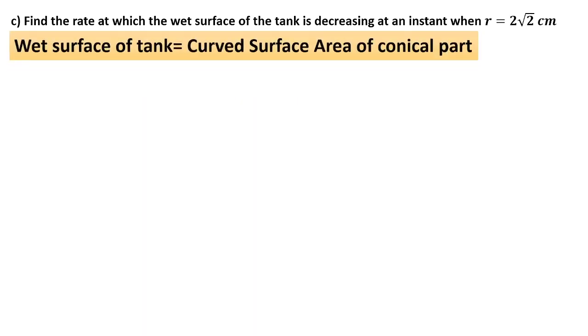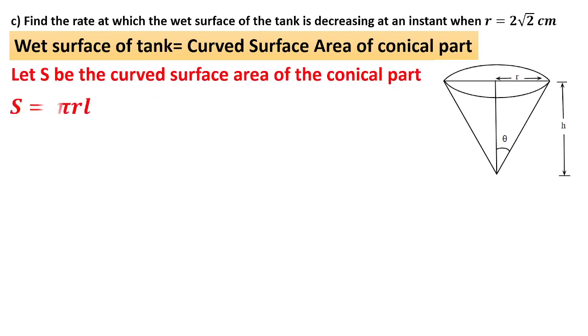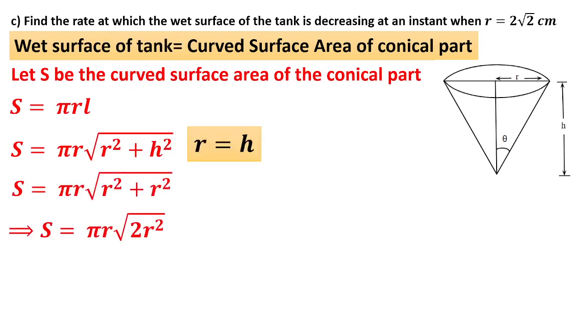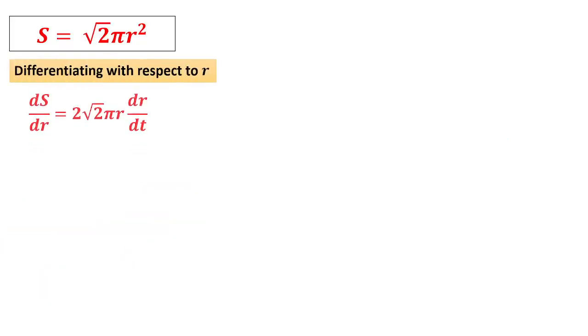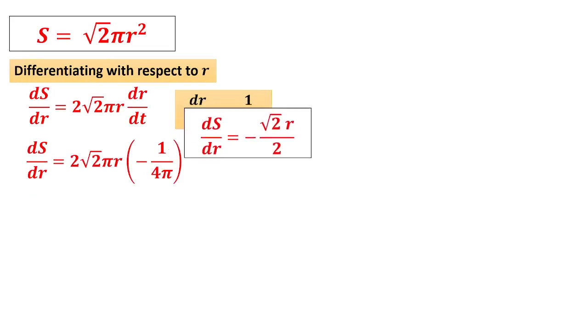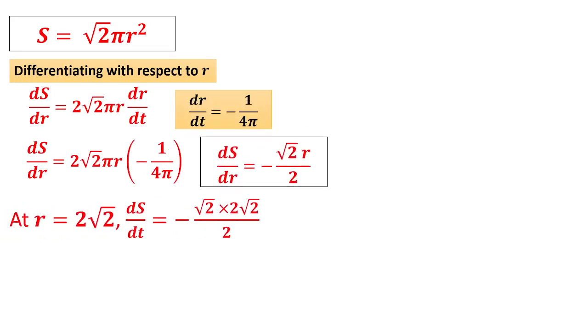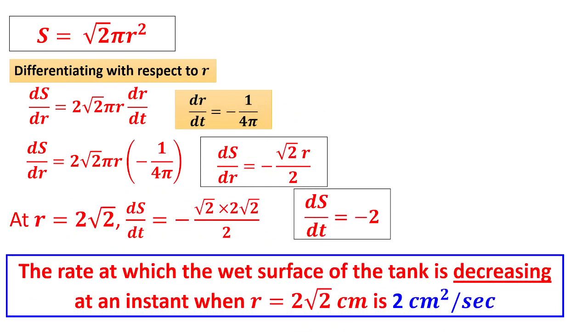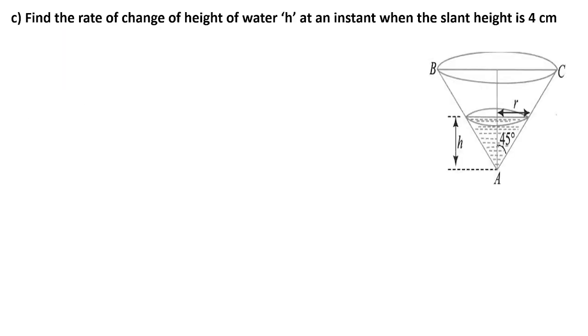Find the rate at which the wet surface is decreasing. The wet surface means curved surface of the conical part. S is the curved surface area, π R L = π R √(R²+H²). But R equals H. Substitute. The equation now involves only R. Differentiate it. dr/dt is -1/(4π), which we already found. Substituting, we got dS/dr at R equals 2√2. The value is -2. Whenever using the word decreasing, you should use only 2 centimeter square per second.